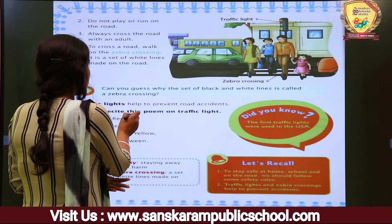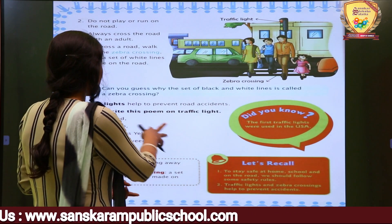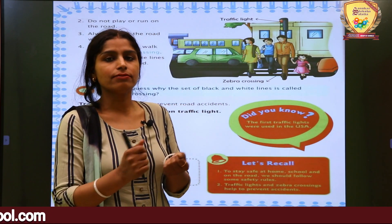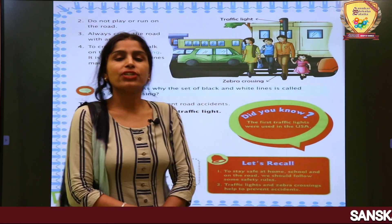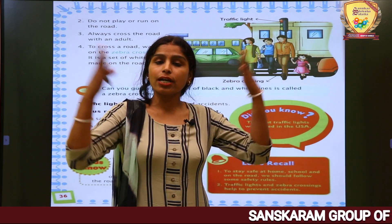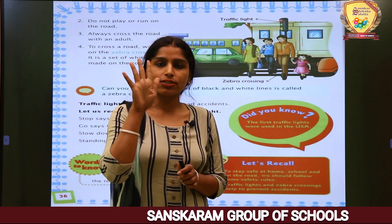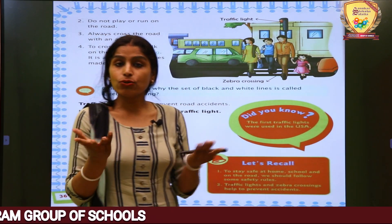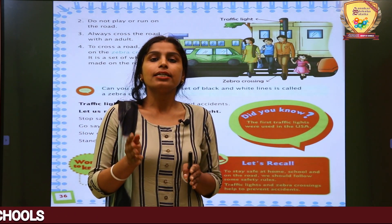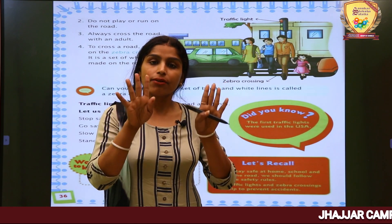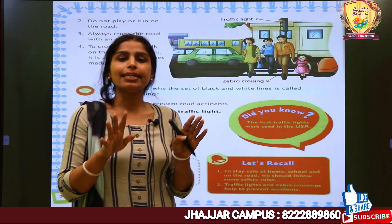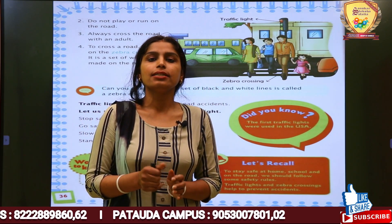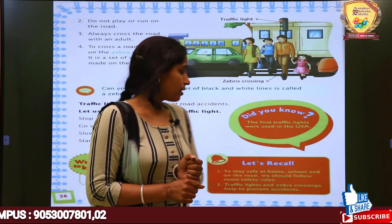Let us recite this poem on traffic lights. Twinkle twinkle traffic light, shining on the corner bright. Red light, red light, what do you say? Red light says stop, stop, stop. Yellow light, yellow light, what do you say? Yellow light says wait, wait, wait. Green light, green light, what do you say? Green light says go, go, go. Twinkle twinkle, shining bright, all the corners shining bright.